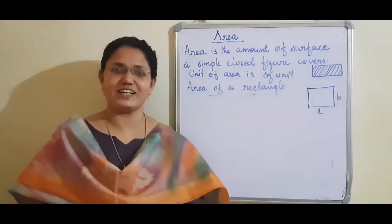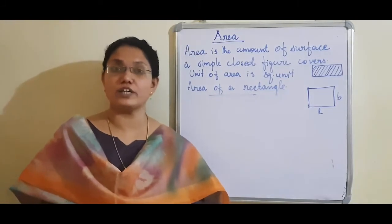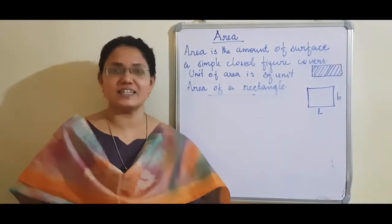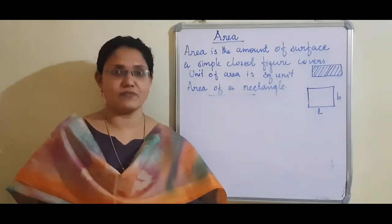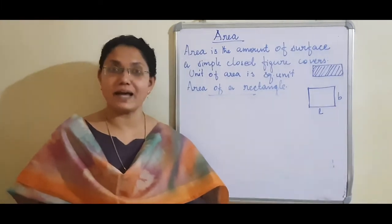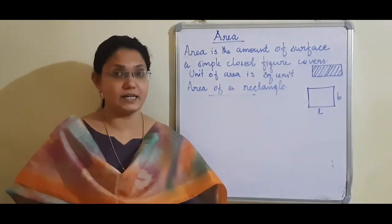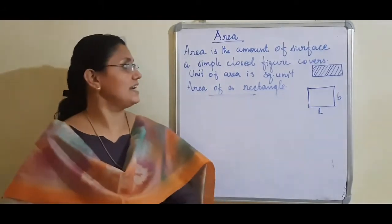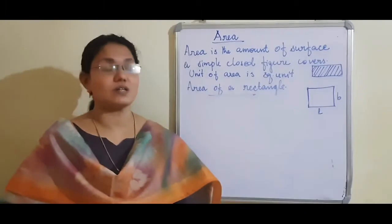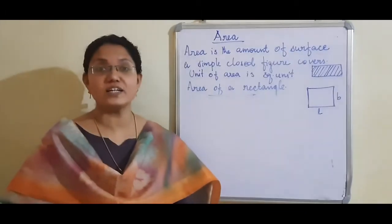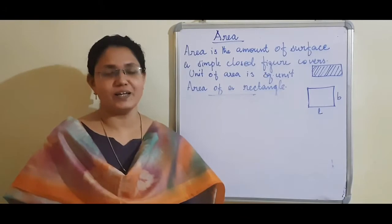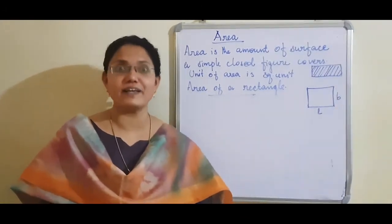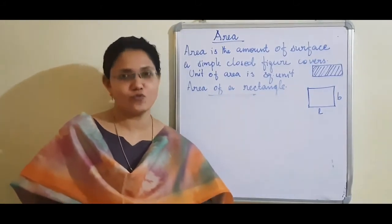What is meant by area? When we construct a building, we should know the area. According to the field only, we are constructing a home. So an architect makes a plan for the house or for a building. Area is the amount of surface a simple closed figure covers — that is, inside a simple closed figure, how much space is there. That is the area of that figure.